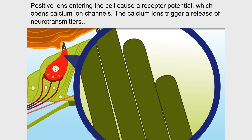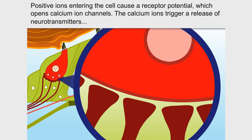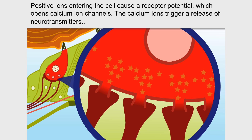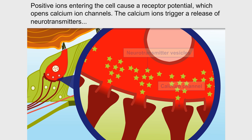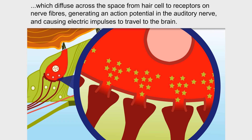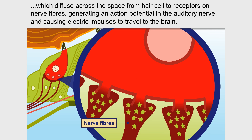Positive ions entering the cell cause a receptor potential which opens calcium ion channels. The calcium ions trigger a release of neurotransmitters, which diffuse across the space from hair cell to receptors on nerve fibres.